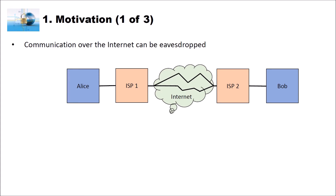For instance, we have here Alice and Bob who want to communicate over the internet. The internet is this blurry cloud here in the middle. Alice has her internet service provider ISP1 and Bob has his internet service provider ISP2. Alice is connected to the internet using ISP1 and Bob using ISP2. The communication from Alice to Bob goes to the first ISP, then through the internet, and your communication can take different routes.